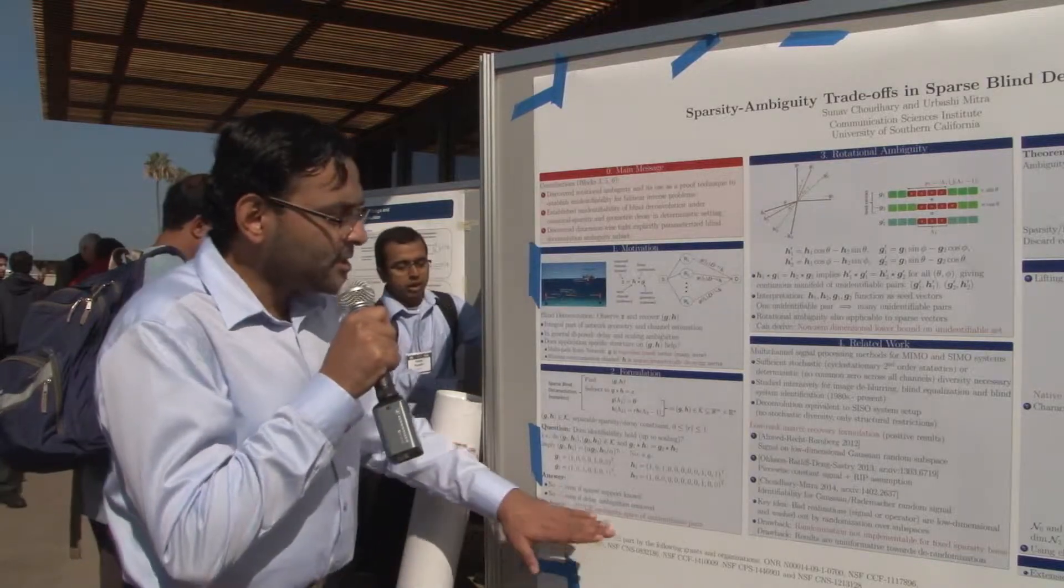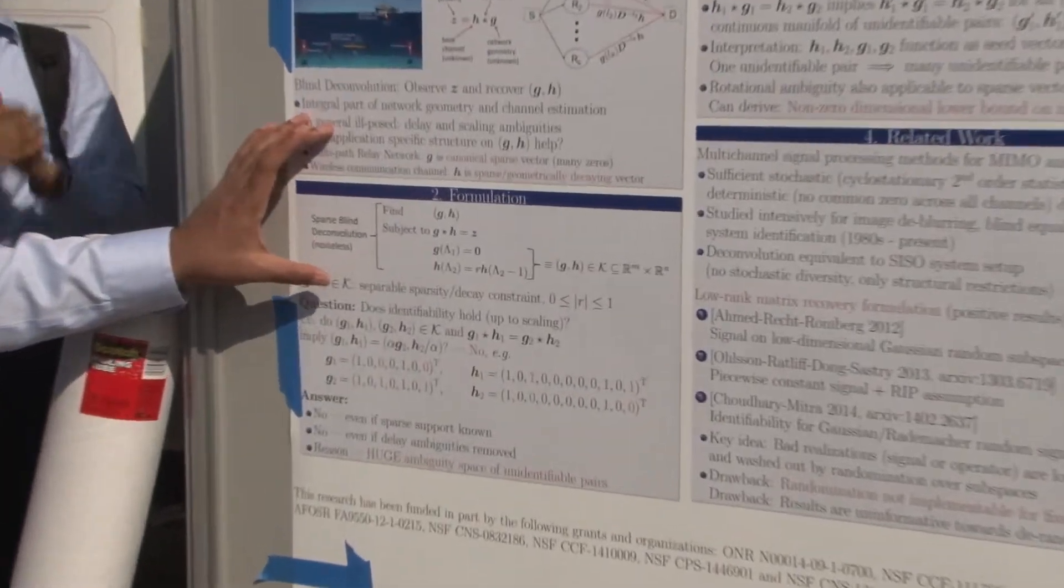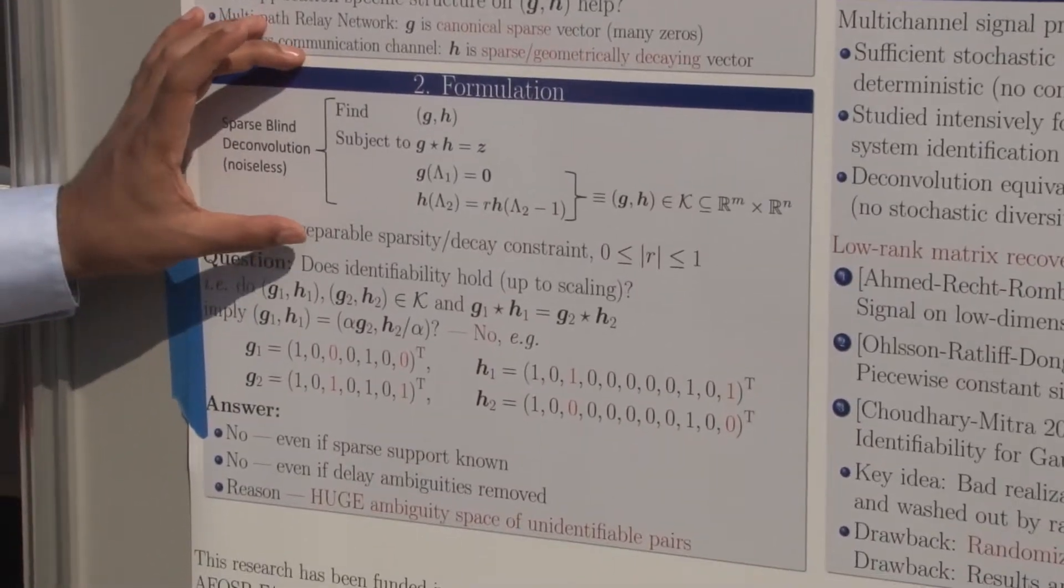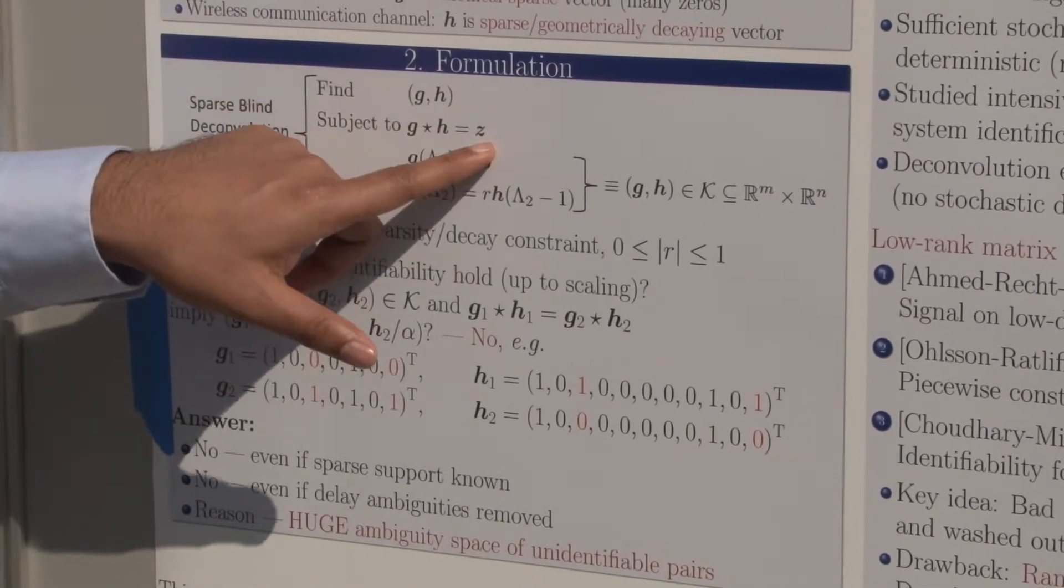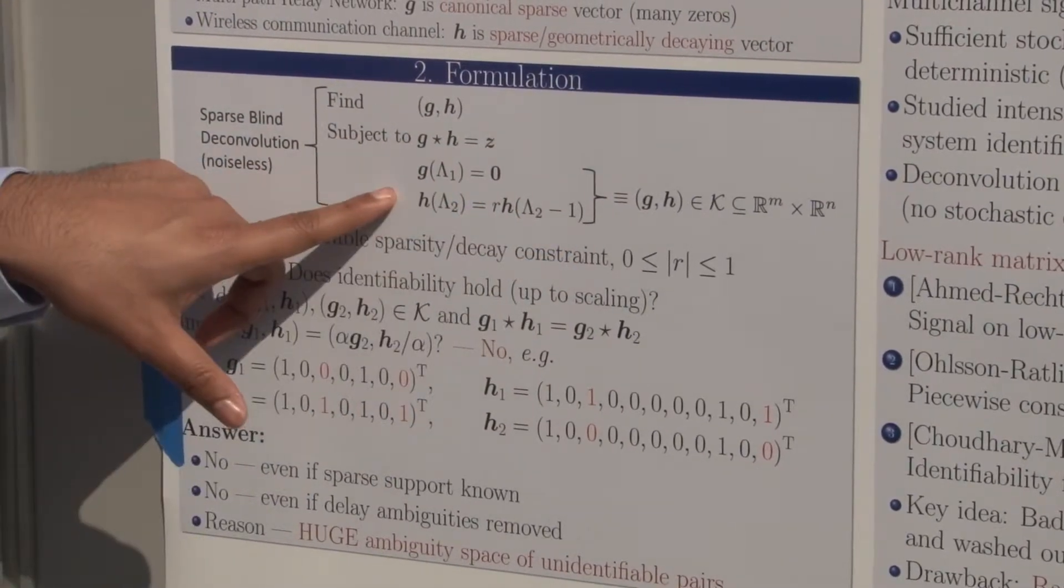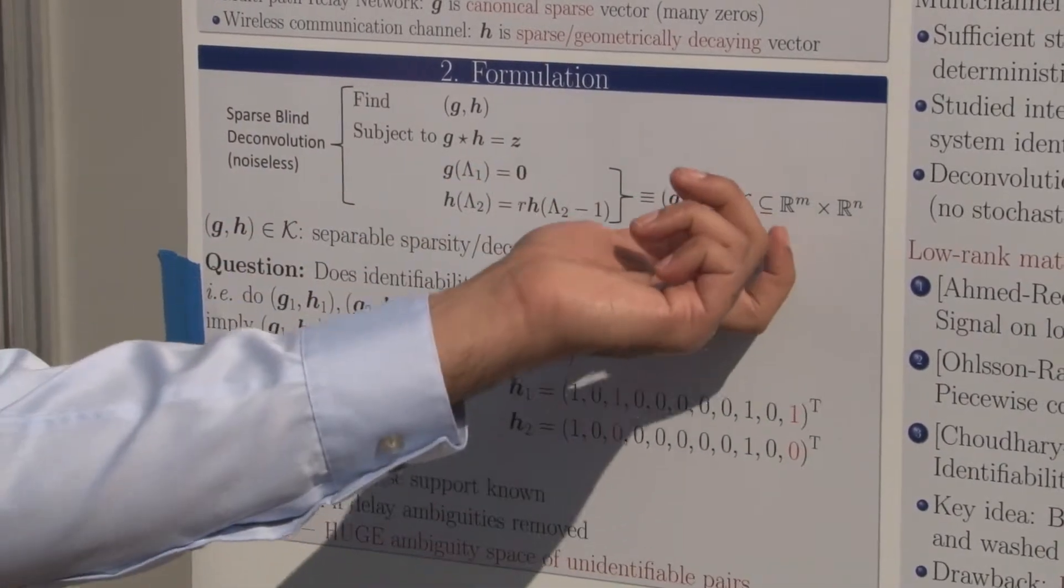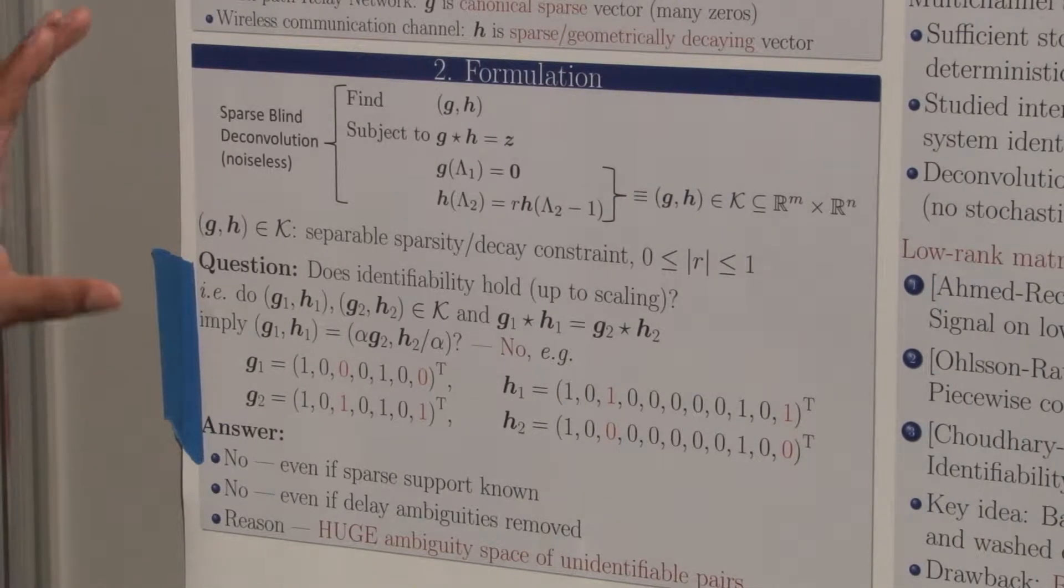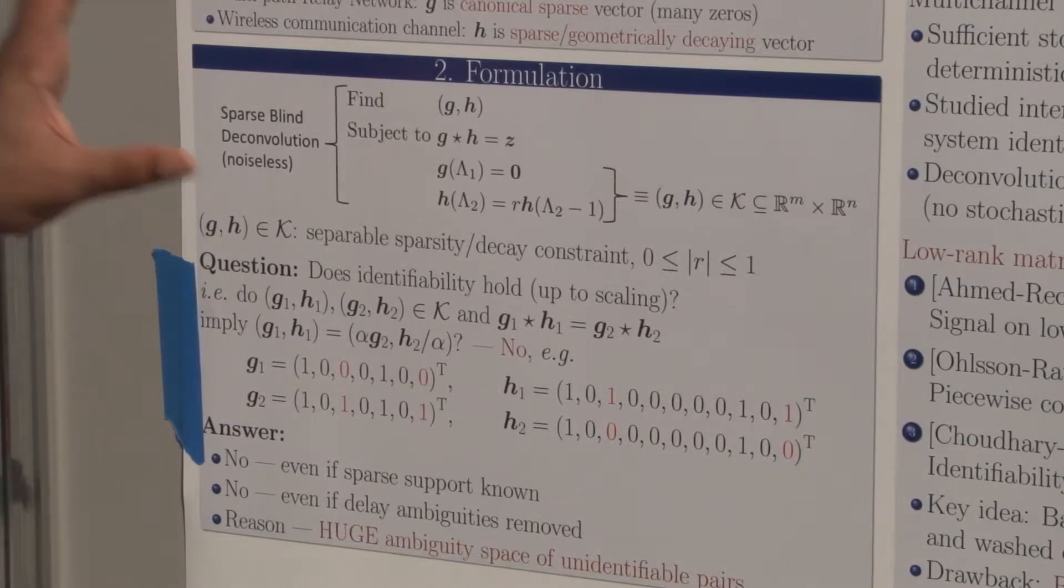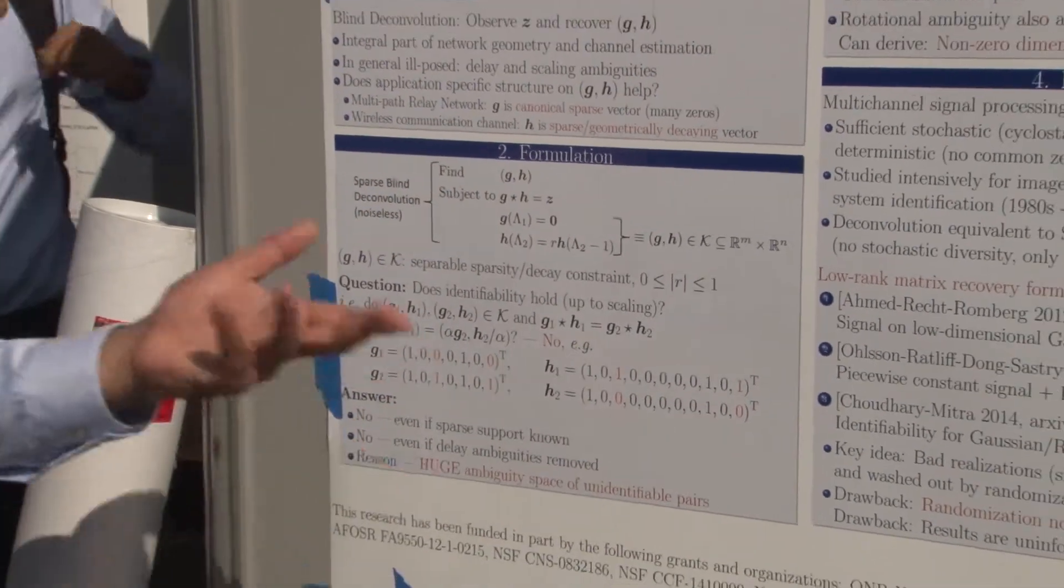The reason is that there is a huge ambiguity space. Here is a formulation of deconvolution under sparsity constraints, where apart from the usual convolution observation, you can have more sparsity observations. I denote this additional information by the set K. We could never reliably invert this problem under sparsity constraints and we tried to analyze why this is happening.